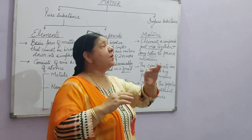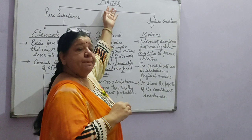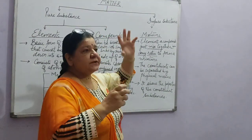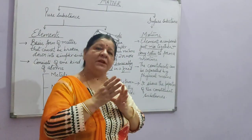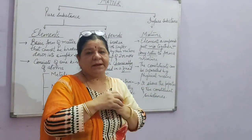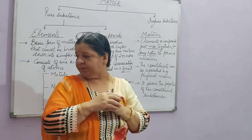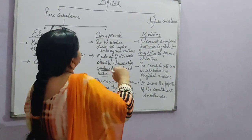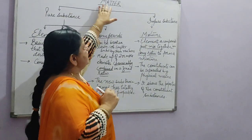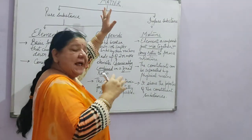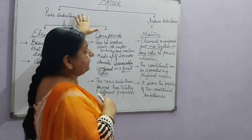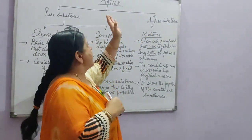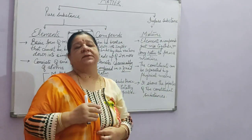You have already read about matter in the first chapter and learned that matter exists in three forms: solid, liquid, and gas. It is made up of small particles called atoms. Now in this chapter, matter has been classified into two forms: pure substance and impure substance.